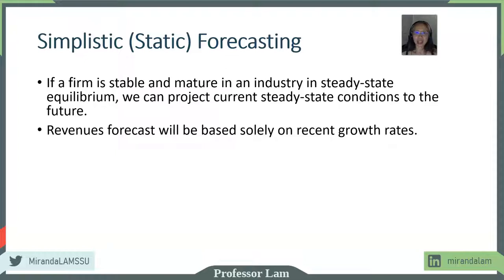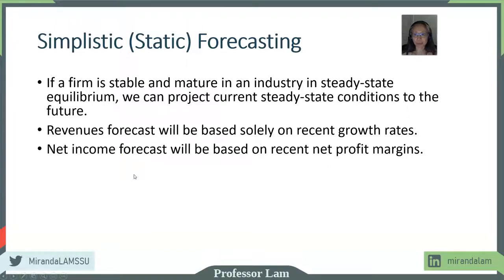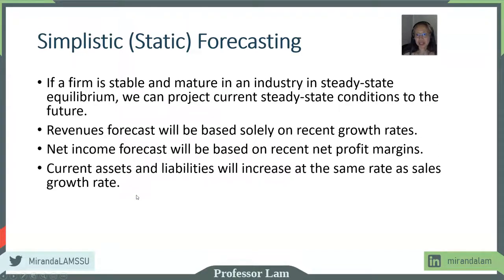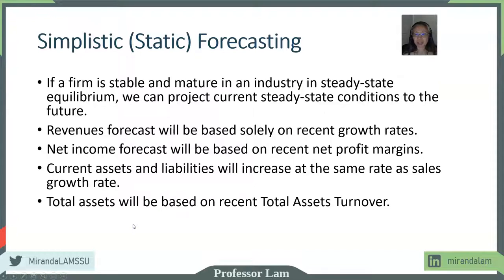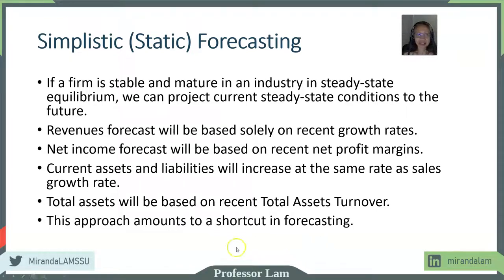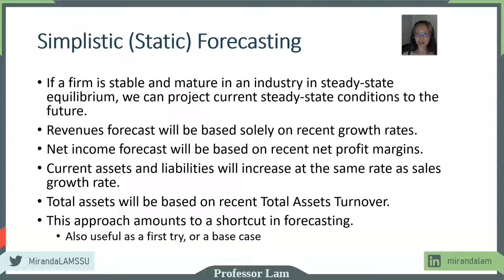What we can do is assume that the sales growth rate will continue into the future, so we compute some average historic growth rate and use that as a forecast for the future. Net profit margin will remain the same, so we can use that to forecast future net income. Current assets and liabilities will increase at the same rate as sales growth because we assume that this is a steady state. And total asset, we can estimate that based on total asset turnover — so the relationship between sales and total asset will be constant. And for capital structure, we can assume capital structure is the same. This is a shortcut, but it is also useful as a first try or a base case, before you add in your unique elements or specific information to adjust for your own input.